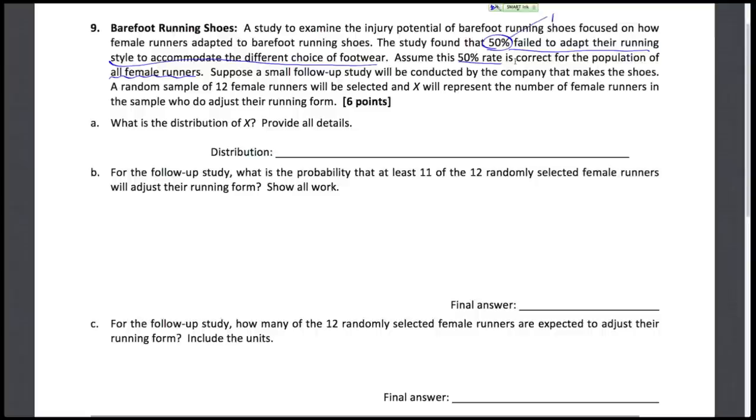So this happens to be the failure rate, but that does imply that 50% will successfully adapt their style to accommodate that different choice of footwear. We're looking at female runners and a small follow-up study is being conducted with a random sample of just 12 female runners. Our sample size is only 12. We're going to let X represent the number of female runners in our sample who do adjust their running form, the number of successes in our sample of size 12.